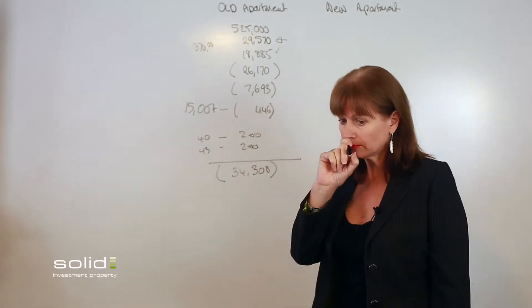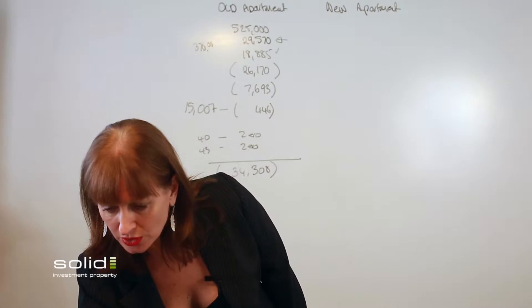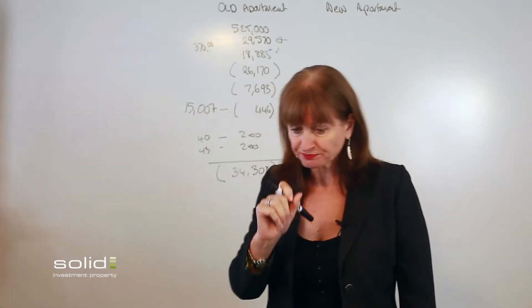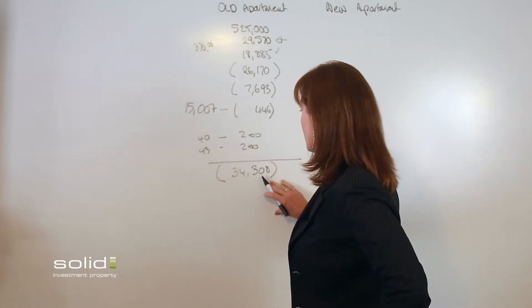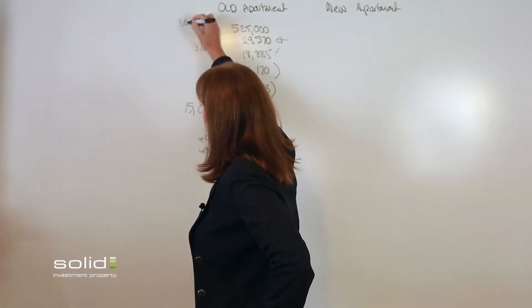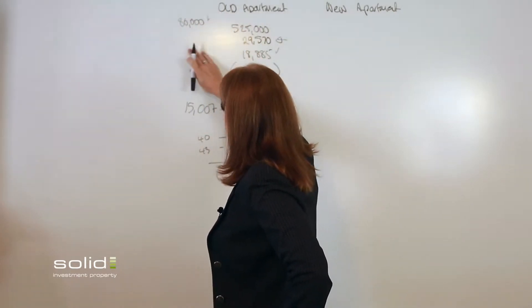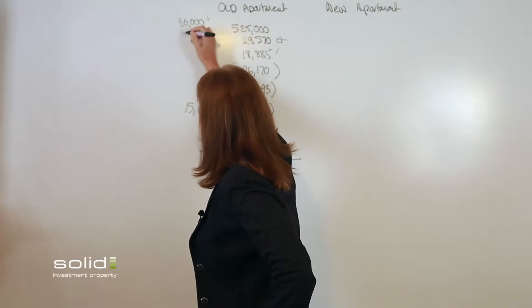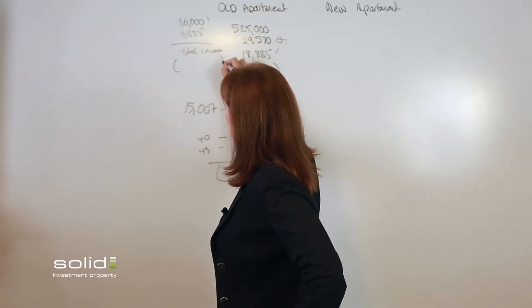Okay, now what we do here is if you have a look at the actual, because you have in fact a total loss of $34,000, and let's say you're on $80,000 a year, so you add together your rent, which is your $18,885, so you add your rent together for your total income and then you take off your losses.